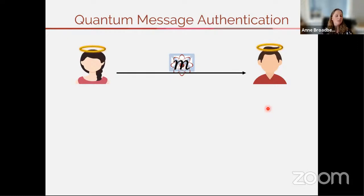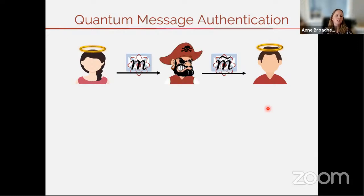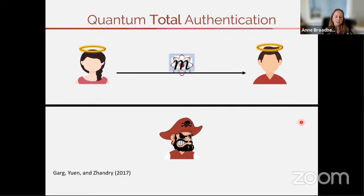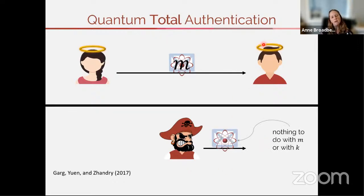It's an interesting link between message authentication and copy protection. In message authentication, we have a message and want to detect if a pirate on the channel is modifying it — Bob can verify that the message has been modified. Quantum total authentication is an upgrade to regular authentication showing that the pirate, upon acceptance by Bob, knows nothing related to the message or to the key. That's really useful because we can dissociate the key from the message upon acceptance.